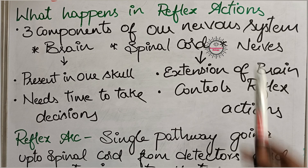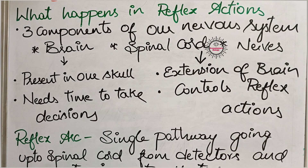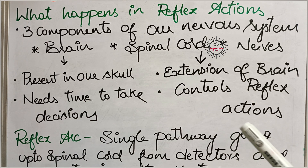There are three components in our nervous system: brain, spinal cord, and nerves. Among them, the brain is very important — it is the main component of our nervous system which takes decisions in our body. Whatever the action may be, either involuntary or voluntary, they were under the control of the brain. Whatever happens in the body, the brain will detect that stimulus, analyze that information, and give responses.